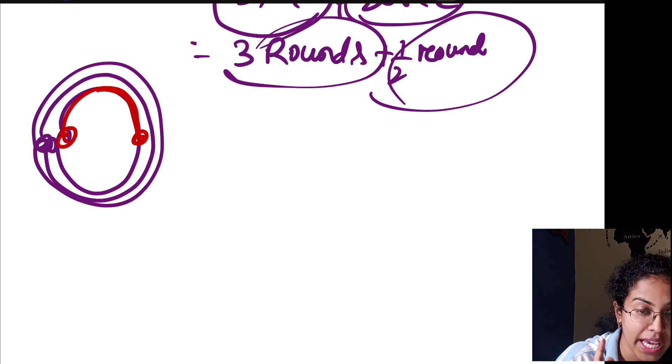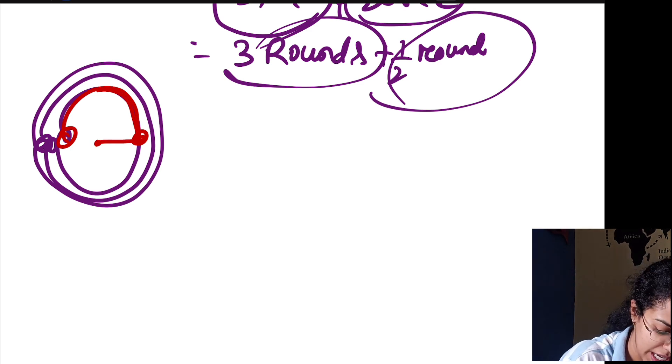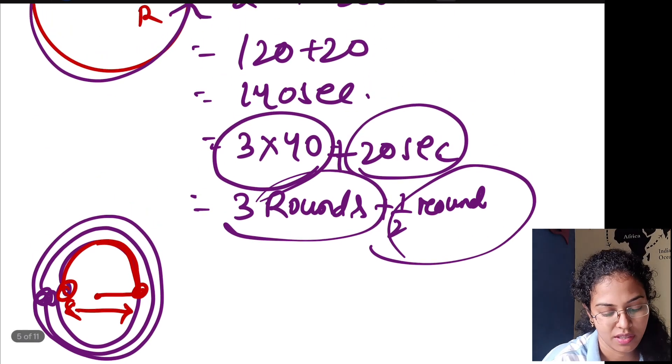The displacement after 3 full rounds is 0. The half round brings you to the diametrically opposite point, so the displacement equals the diameter, which is 2R.